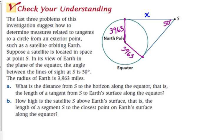So the question is, what's the distance from the satellite to the horizon along the equator? That is, the length of a tangent from S to Earth's surface along the equator. So they're asking us about either of these distances. The one on the top or the other. They're asking for the distance of the tangent line. So anybody have any ideas for what we should do? We can use tangent.